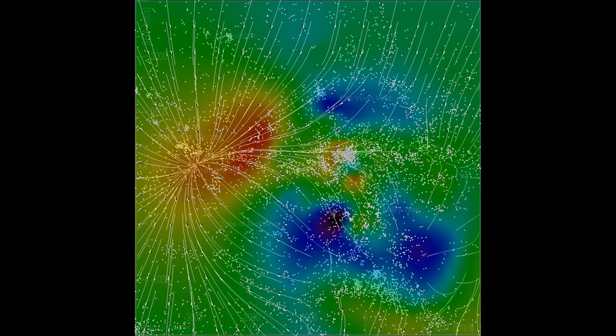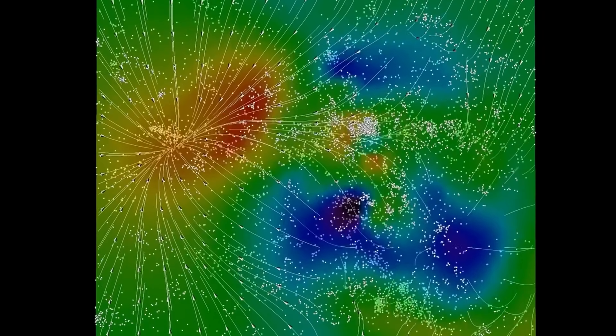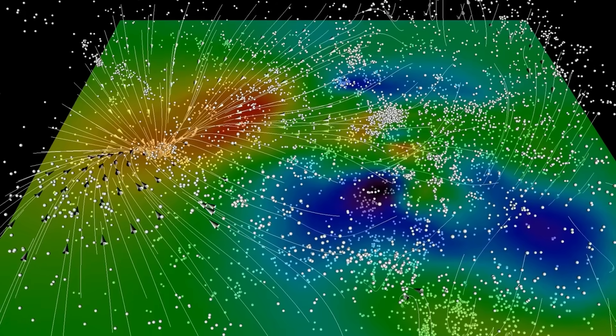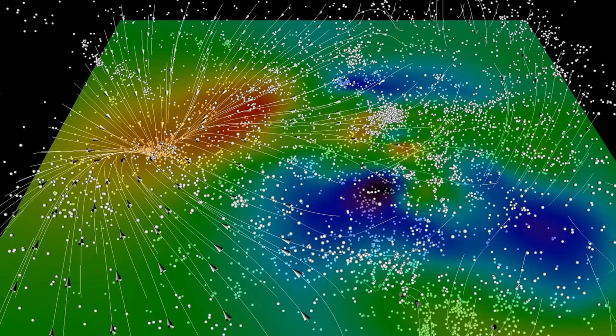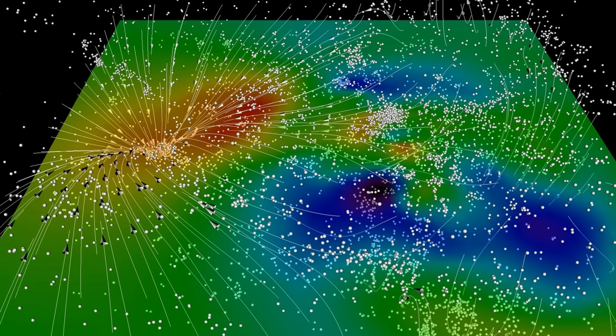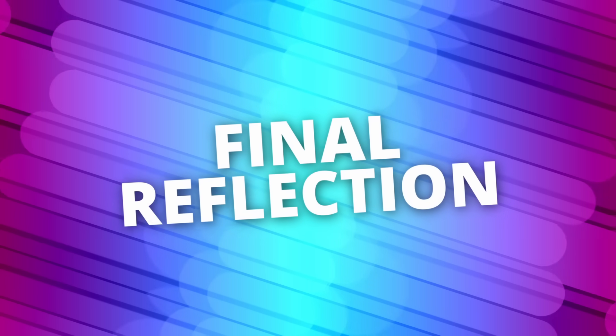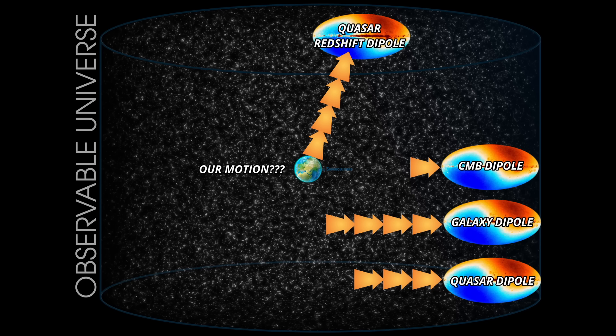And every time we try and measure it in a new way, the disagreement either persists or gets sharper. That's the pattern. Not a single anomaly, but a family of them, all pulling on the same thread. What that thread leads to isn't another isolated anomaly, but a deeper question about the framework itself. Because once you pull on it long enough, you stop wondering why individual measurements disagree, and you start wondering what all of them are disagreeing with.